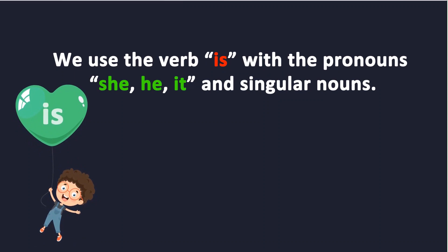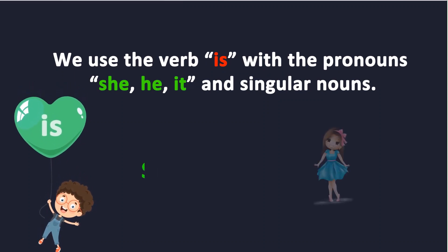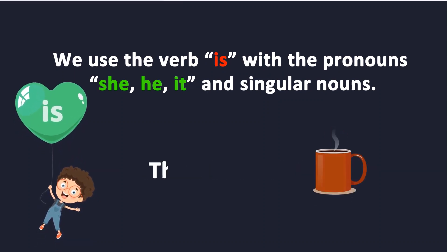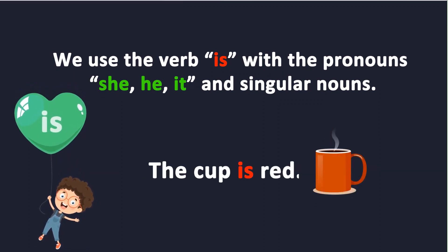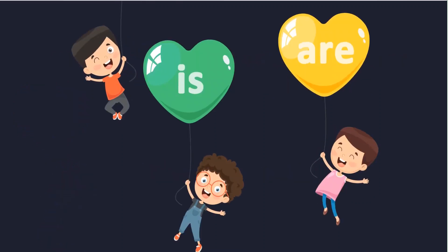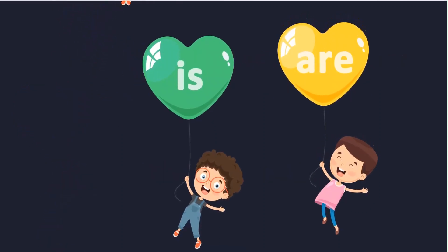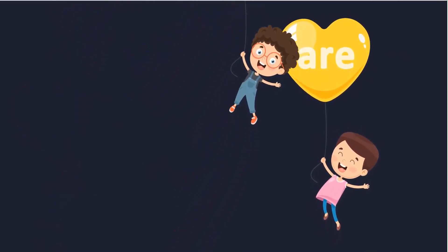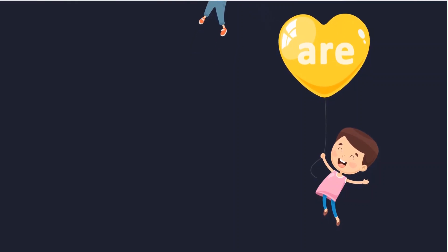We use the verb is with singular nouns. For example, she is beautiful. The cup is red. We learned that we use the verb is with singular nouns and pronouns.